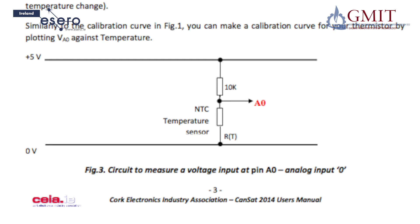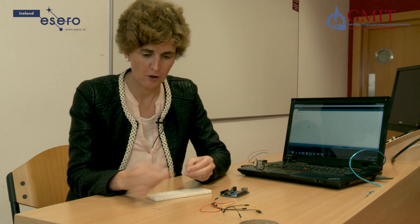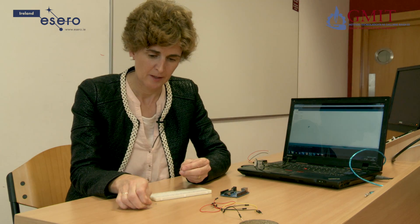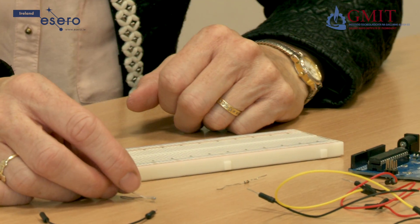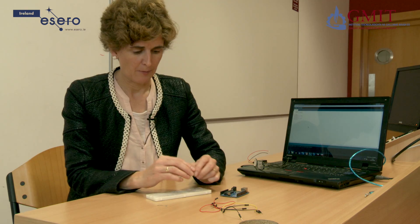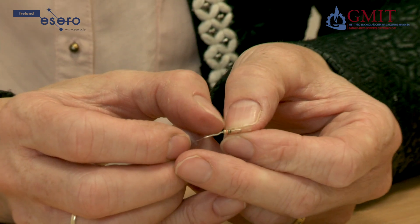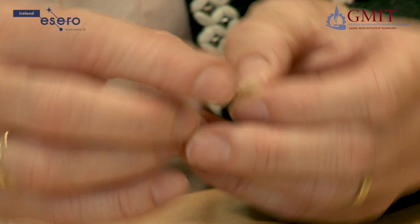To build the circuit, we need a 10K resistor, a thermistor, and some wires and breadboard on the Arduino. The values of resistors are identified by the colour coding bands on them. You'll find more on this on the web or in your physics book. This one is brown, black, orange.